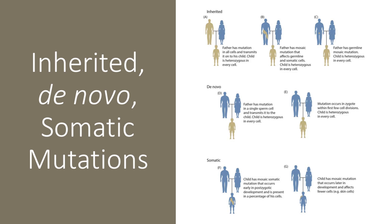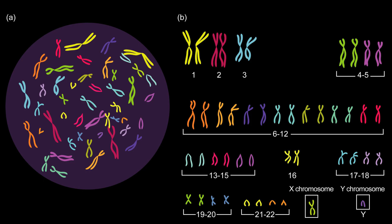Each of us also has somatic mutations that are accumulated during cell divisions. An extreme example of this is cancer, where somatic mutations cause cells to grow uncontrollably. There are many types of genetic variations in the human genome, and different genetic variations may have very different effects on the genome and on the phenotype.